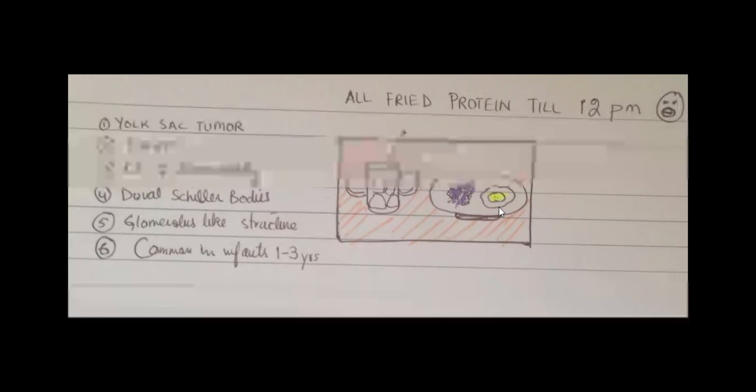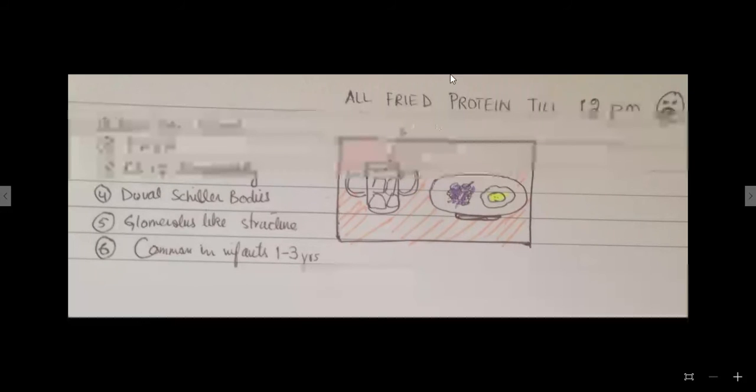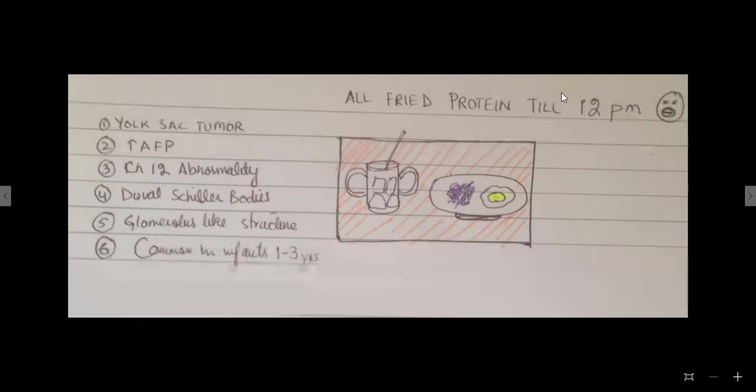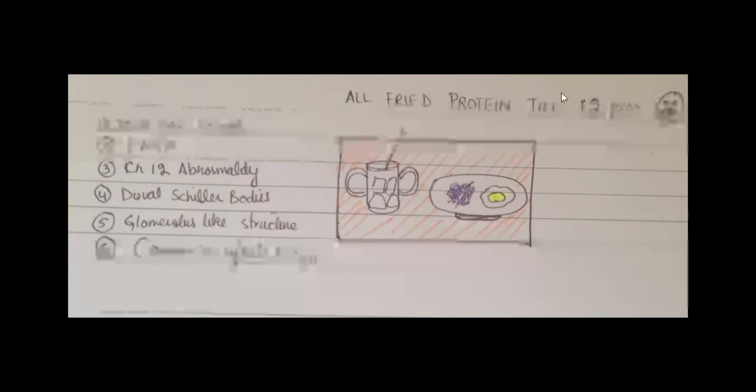It's yolk sac and it's raised with alpha fetoprotein levels and till 12 pm. So what's this showing? Most of the malignant tumors of the testes are associated with abnormality of chromosome number 12, instead of a normal p q arms of the chromosome 12.